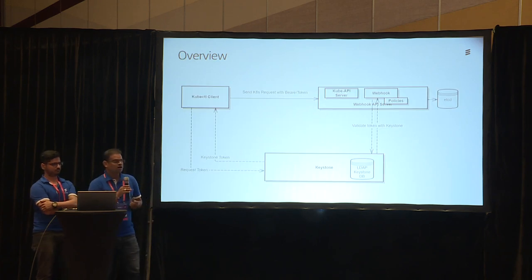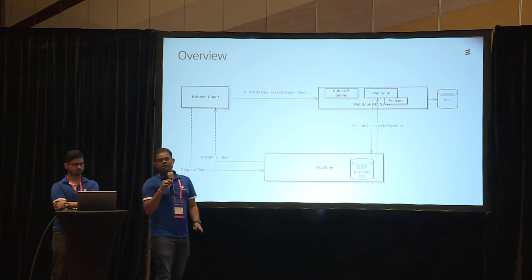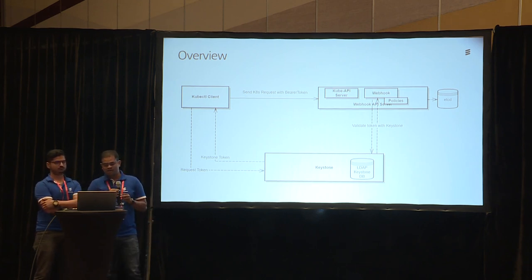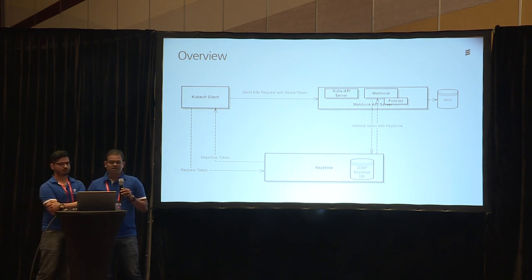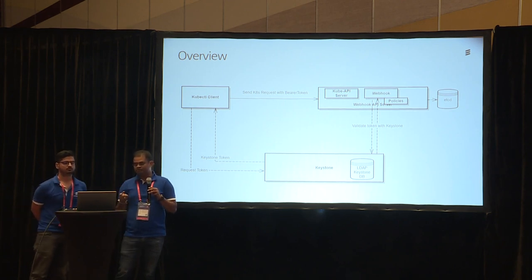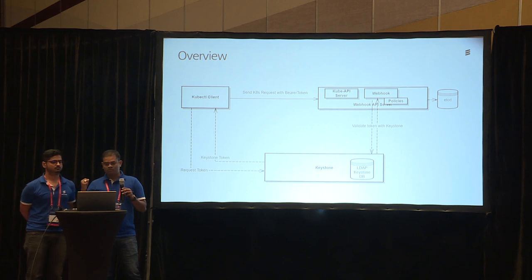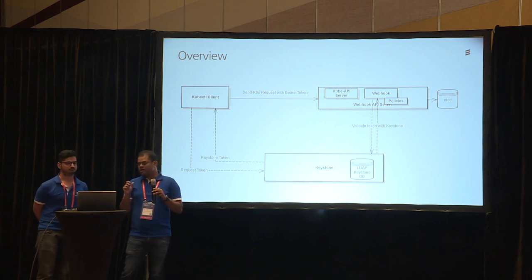Moving on to the next, we have a high-level overview of how it works and how the integration happens. As you can see, there is a kubectl client — this is all the external communication that happens to Kubernetes. The kubectl client, from version 1.8.0, provides the option to integrate OpenStack environment variables or Keystone user environment variables. It can request Keystone to get a token, and once it gets the token back, the kubectl client passes that token as part of the request to the webhook API server.